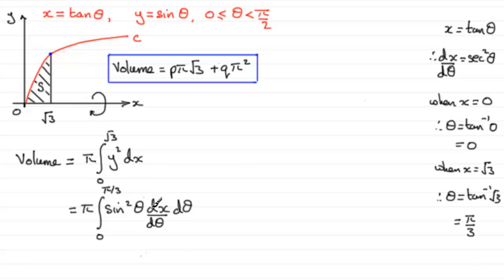Now, let's substitute for dx by d theta at this stage. So what are we going to have? We're going to have pi then times the integral from naught to pi upon three. We've got sine squared theta multiplied by dx by d theta, which is sec squared theta. Sec squared theta is the same as one over cos squared theta, and it's integrated with respect to theta.